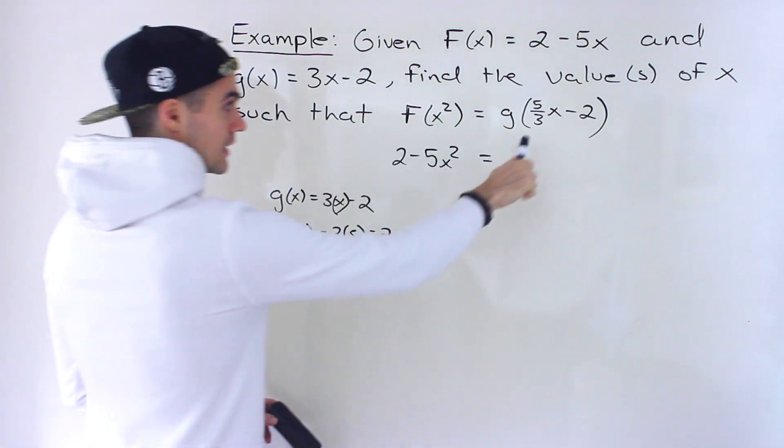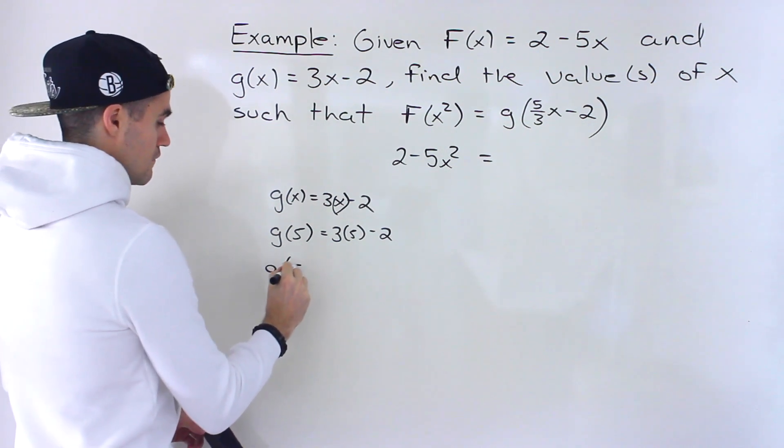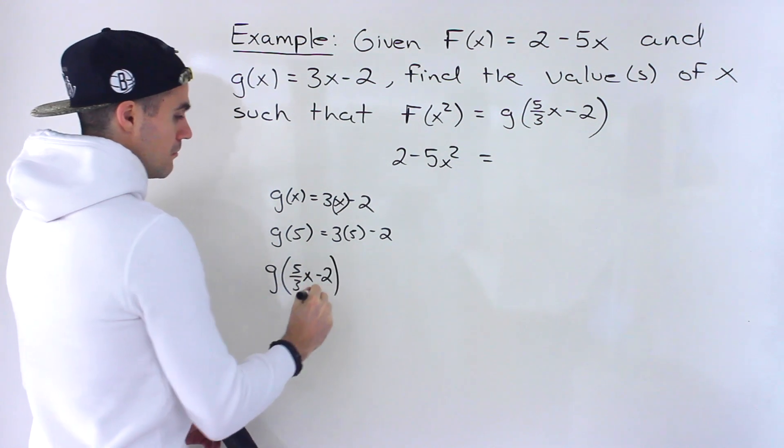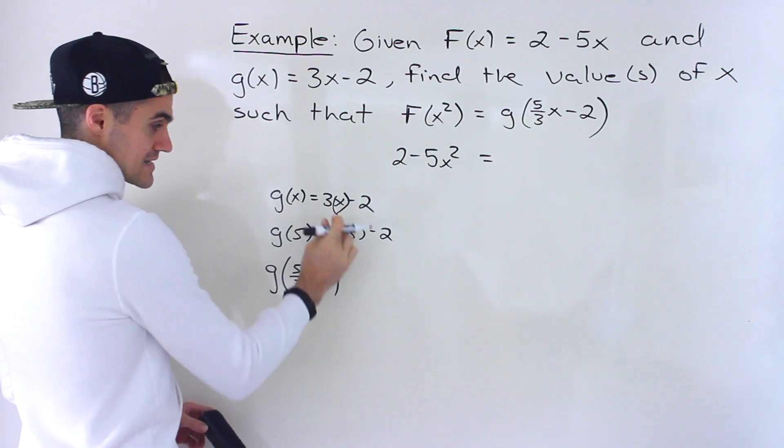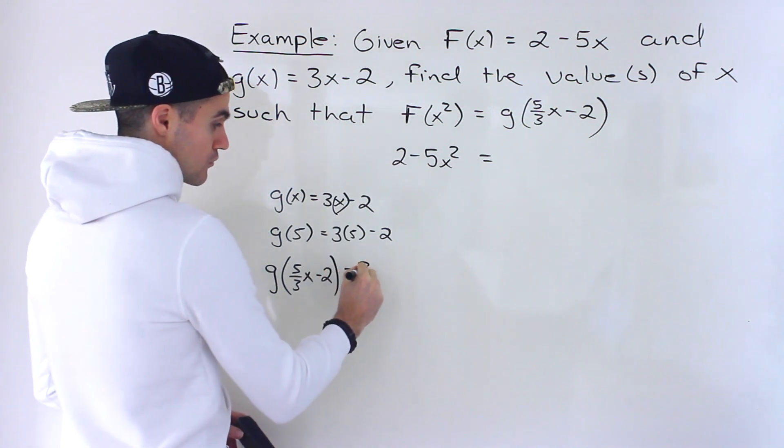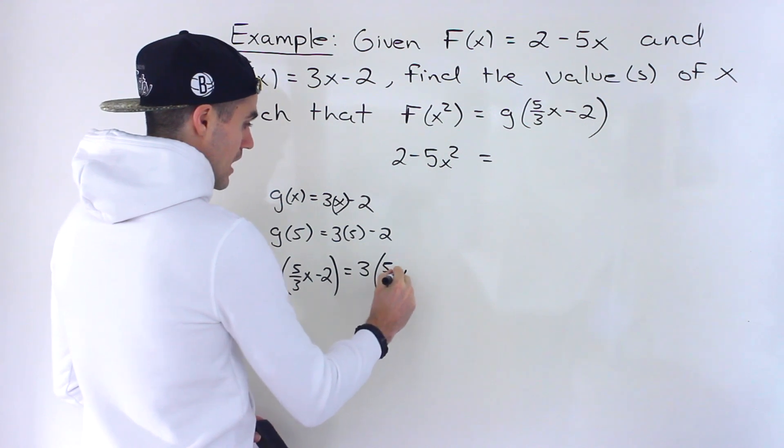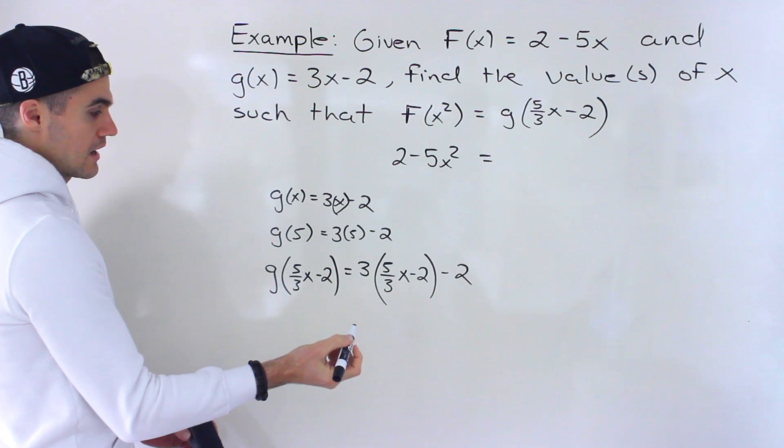And so notice we're going to plug in another expression here. So we'll have g of 5 over 3x minus 2. So we've got to plug that whole expression into this x value. So you would have 3 times 5 over 3x minus 2, minus 2, like that.